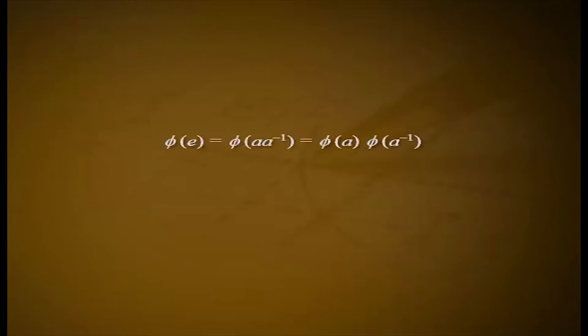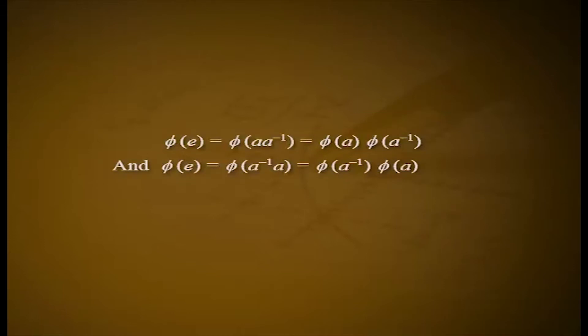For part 2: phi of E equals phi of A·A inverse equals phi of A into phi of A inverse, and phi of E equals phi of A inverse·A equals phi of A inverse into phi of A. Therefore phi of A into phi of A inverse equals phi of E equals phi of A inverse into phi of A. Since phi of E is the identity in G dash, this shows that the inverse of phi of A is phi of A inverse, i.e., phi of A inverse equals phi of A inverse.